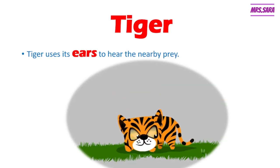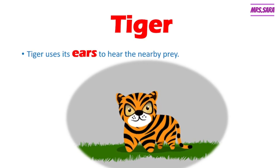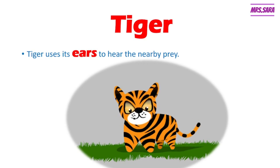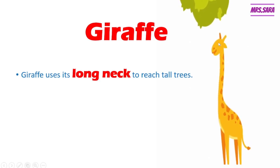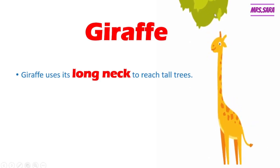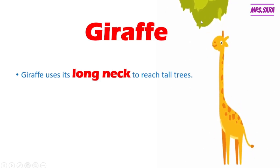And we have here the tiger. Tiger uses its ears to hear the nearby prey. Do you know the meaning of prey, Primary 2? The food of the tiger — any food that the tiger eats, we call it prey. So a tiger uses its ears to hear the nearby or close prey. And last one: giraffe, Primary 2. The giraffe has a long neck to reach tall trees. Can you see the giraffe eating from the tall tree? So the giraffe has a long neck to reach the tall tree.